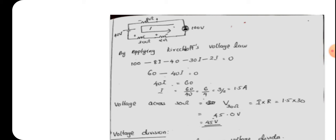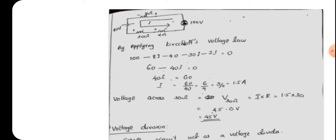Solving the KVL equation: 100 minus 40 gives 60, and the resistance terms give minus 8I minus 30I minus 2I equals minus 40I. So 60 minus 40I equals 0, giving 40I equals 60, and I equals 60 divided by 40, which equals 1.5 ampere. For the voltage across 30-ohm, it is 30 times I, so 30 into 1.5 equals 45 volt. This completes the application of Kirchhoff's Voltage Law.